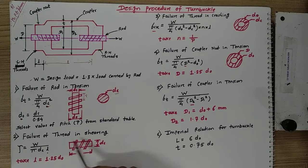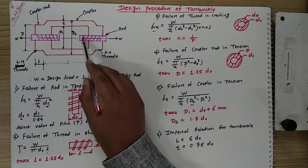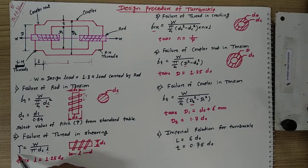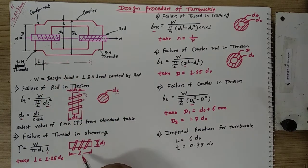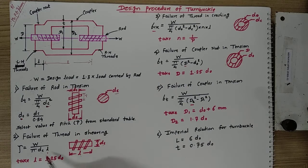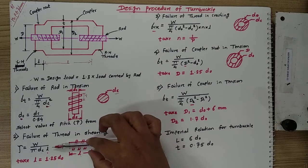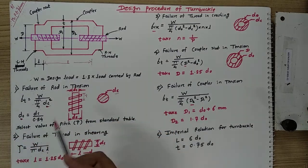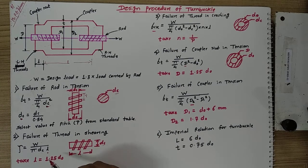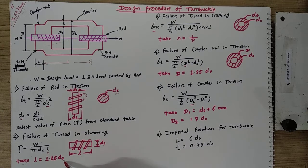The second step is failure of thread in shearing. This threaded portion fails in shearing due to the transferred load. The shear stress tau equals load upon area, where the area is the circumferential area: pi times DC times l. From that equation we calculate the length of the coupler nut. We also consider the empirical relation: small l equals 1.25 times the nominal diameter.